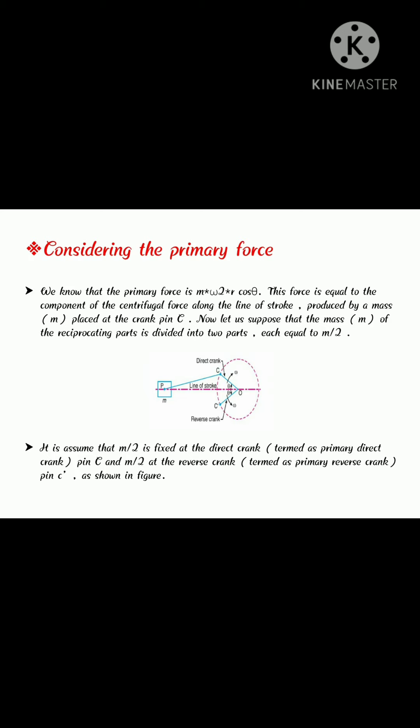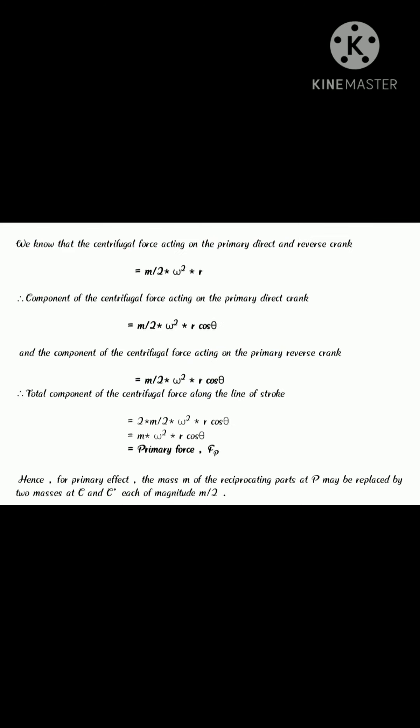We know that the centrifugal force acting on the primary and reverse crank is equal to M by 2 omega square R cos theta in the direction from O to P. So that total component of the centrifugal force acting on the primary reverse crank is equal to